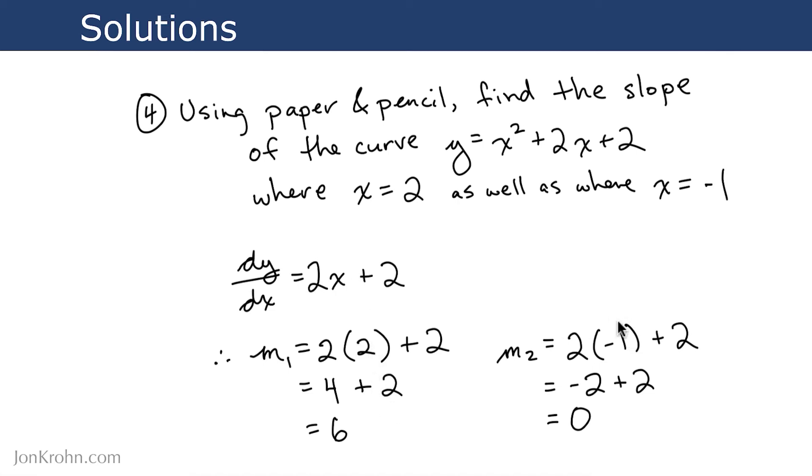And we drop in an x value of negative 1 to get a slope of 0 at that point.